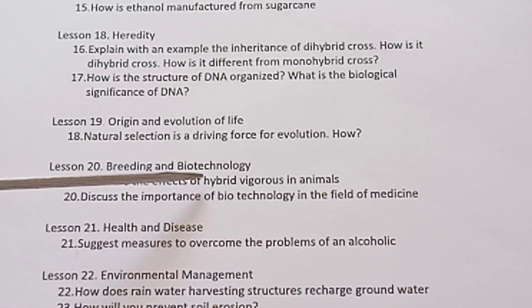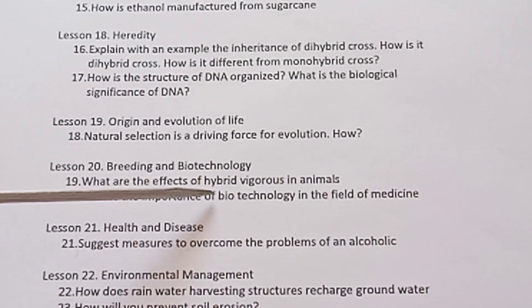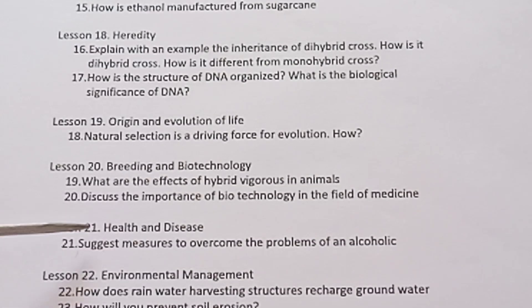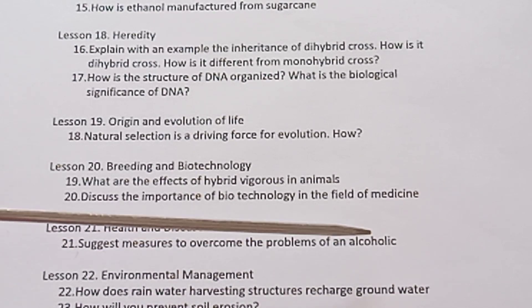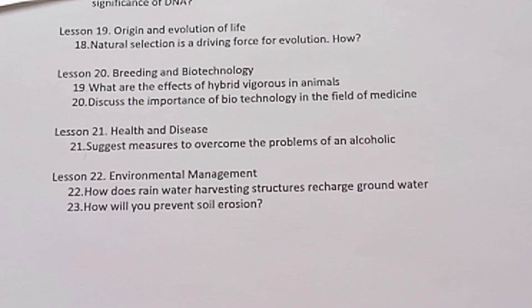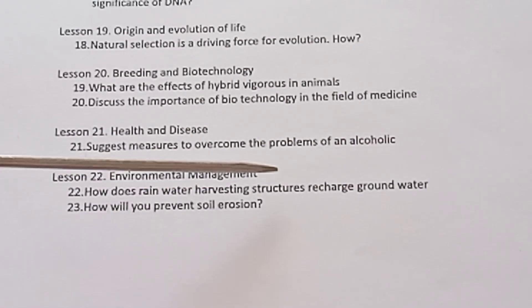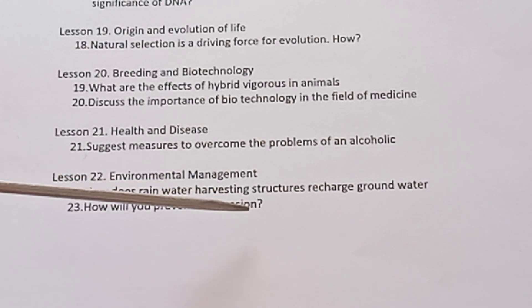Lesson 20 Breeding and Biotechnology. What are the effects of hybrid vigour in animals? Discuss the importance of biotechnology in the field of medicine. Lesson 21 Health and Disease. Suggest measures to overcome the problems of an alcoholic. Lesson 22 Environmental Management. How does rainwater harvesting structures recharge groundwater? How will you prevent soil erosion? All the best.